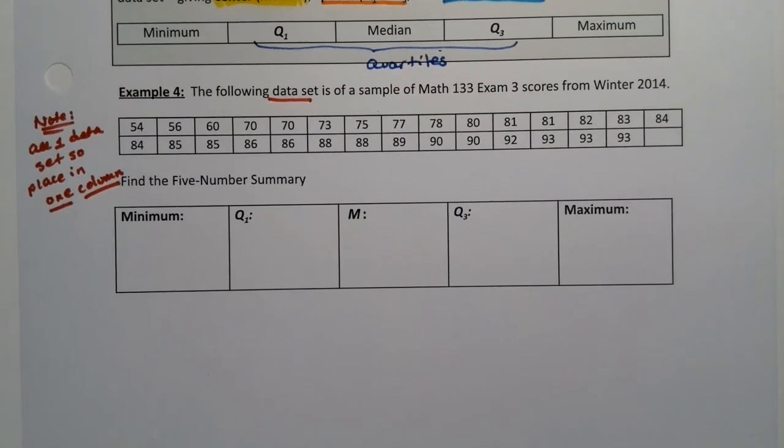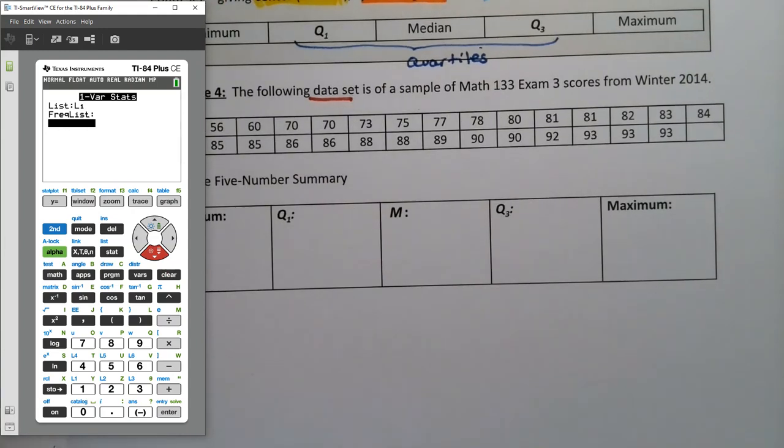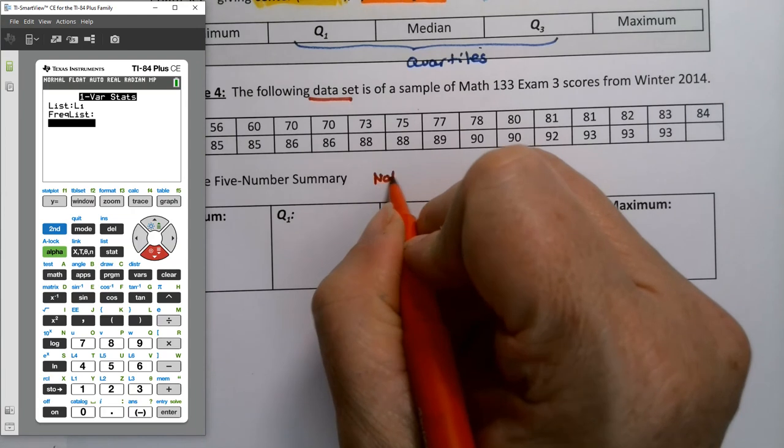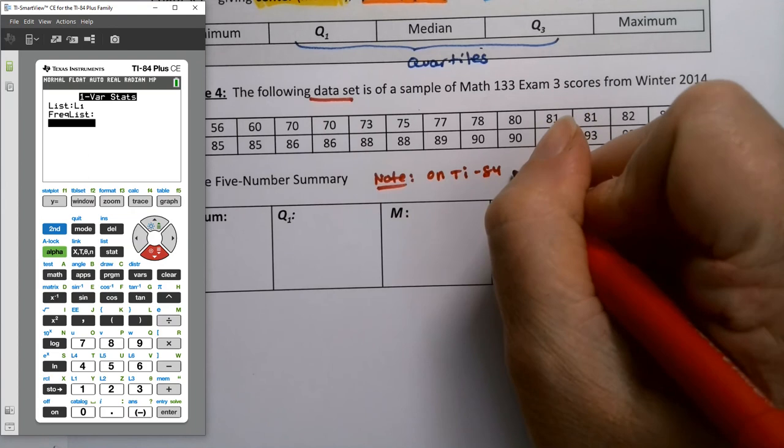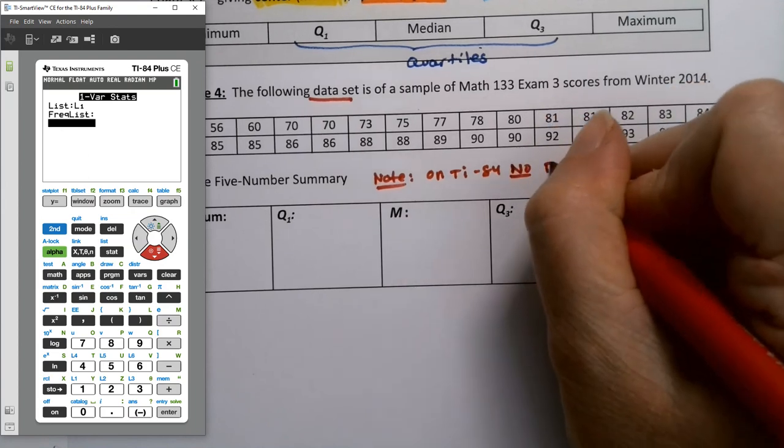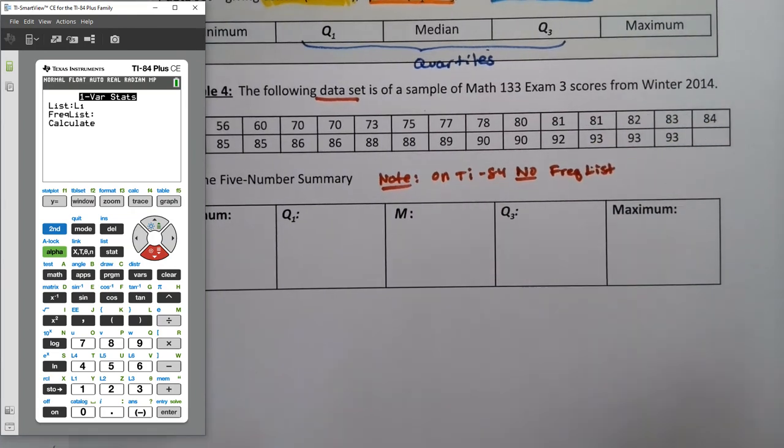Okay. All right. So we're going to find the five number summary. I'll do it with the calculator first this time. So with the calculator, I have all those data points in there. So I go to stat, calculate one variable. You do not want your frequency list. So if you have a frequency list right here, you want to clear it out. It should be blank. Do not get your freak on. Right. So we'll make a little note. If you're using one variable stat on TI-84, if you're using that, no frequency list.